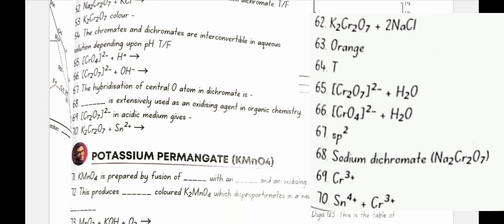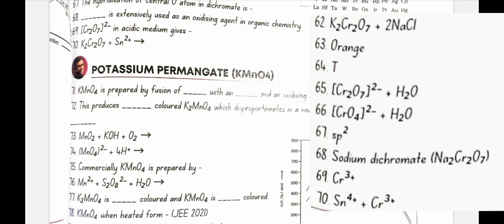Sodium dichromate is extensively used as an oxidizing agent in organic chemistry. Cr2O7 2 minus in acidic medium gives Cr3 plus. K2Cr2O7 plus Sn2 plus gives Sn4 plus plus Cr3 plus.